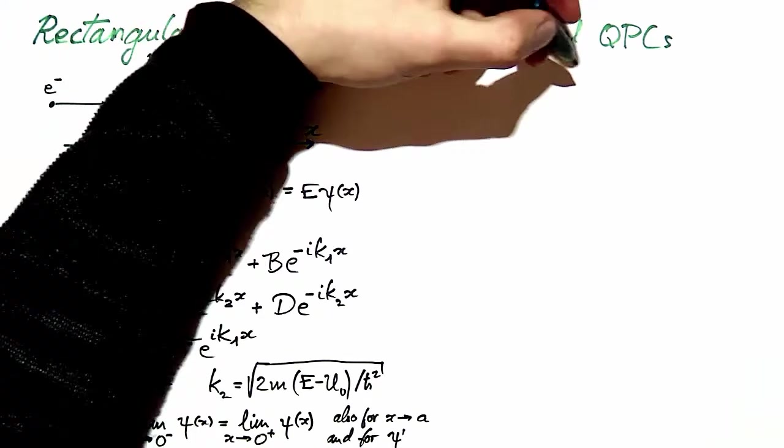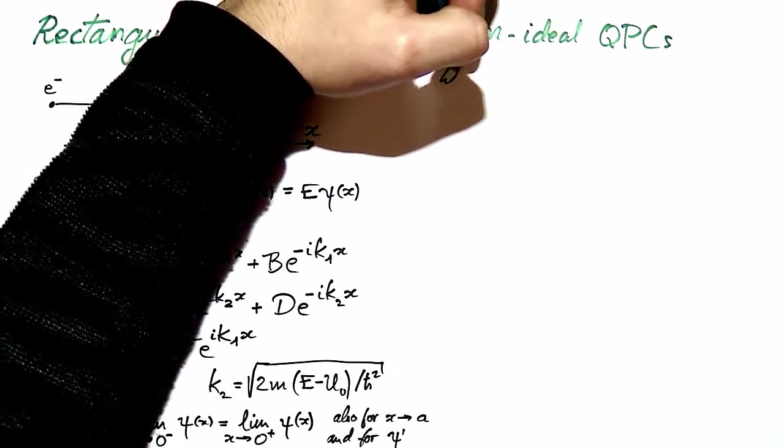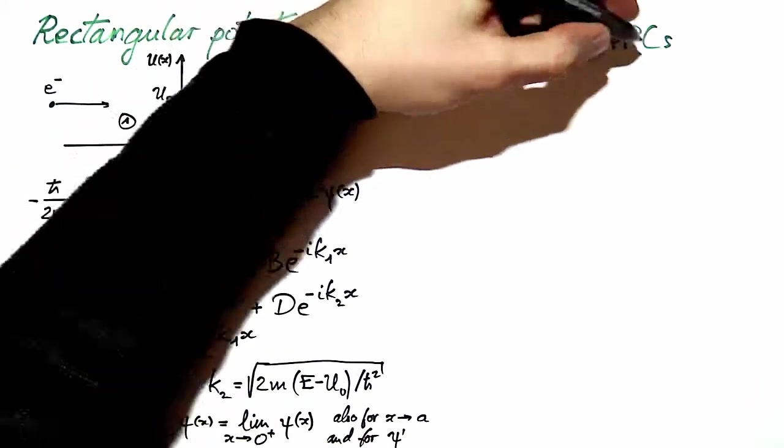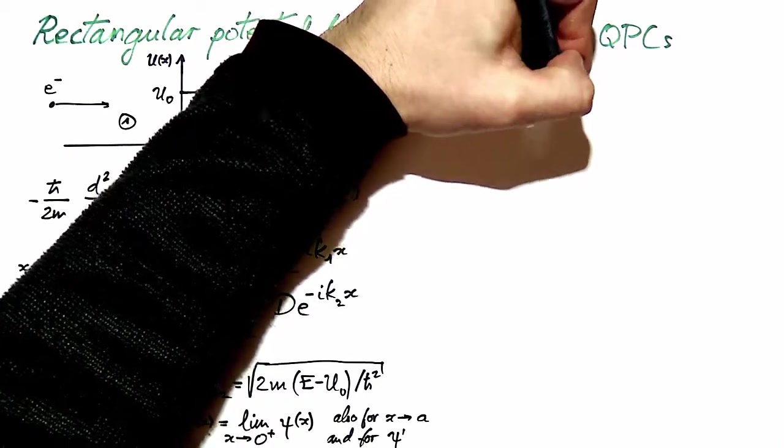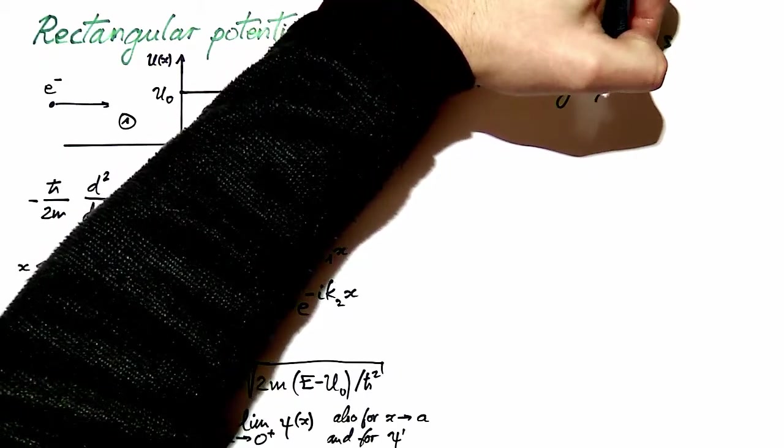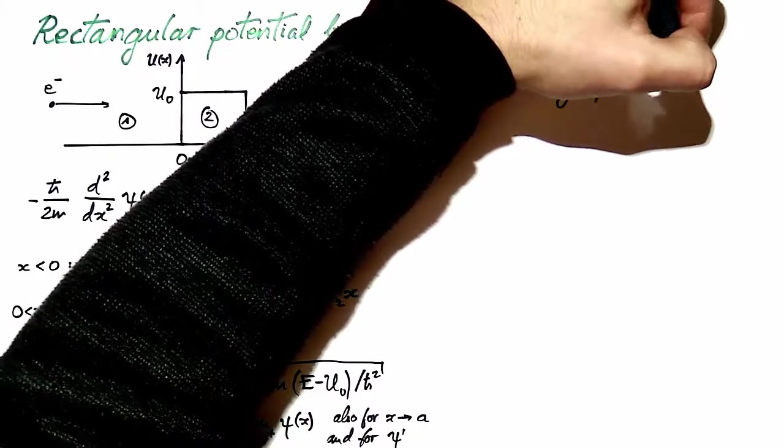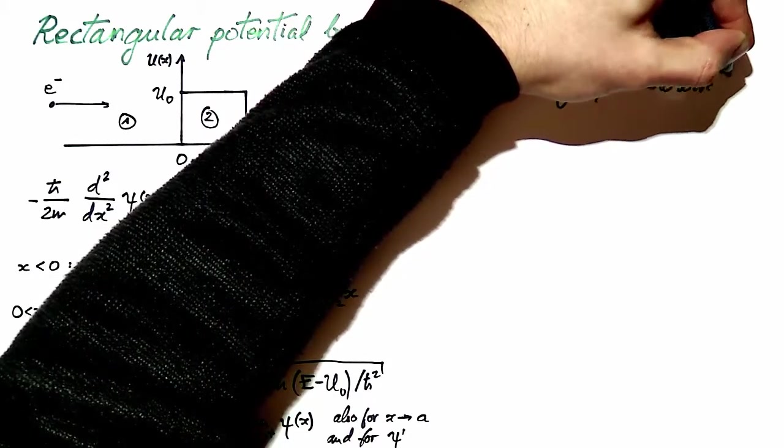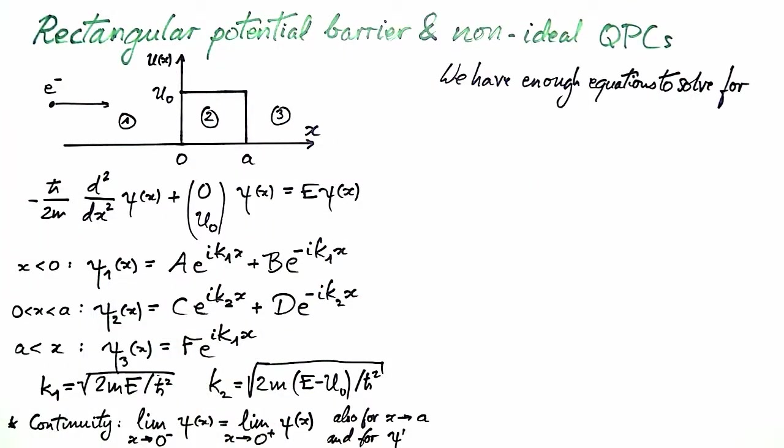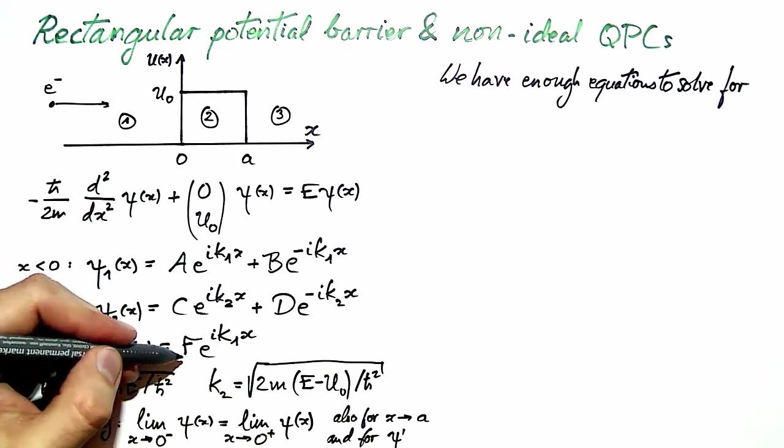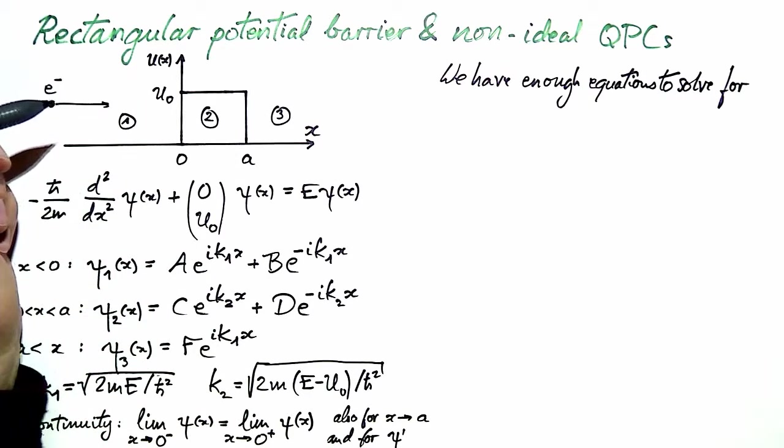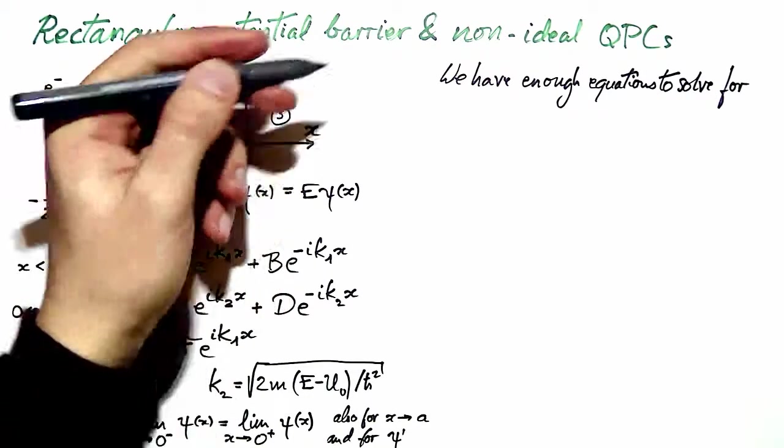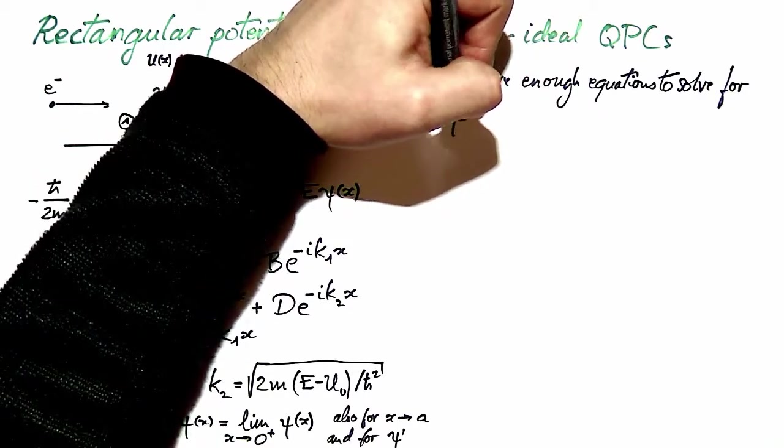With this, we have enough equations to solve for the ratio of the amplitudes of the two right propagating plane waves, which is nothing else than the transmission through the barrier, which I denote t.